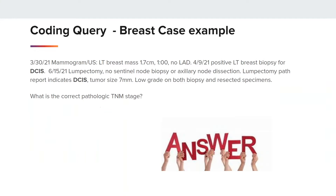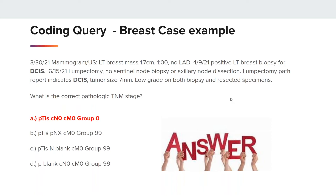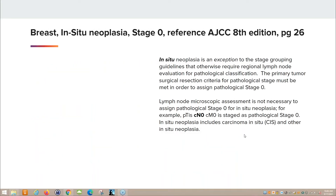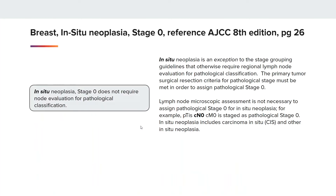The correct pathologic TNM stage is A: PTIS, CN0, CM0, group 0. The reason is that for an in-situ neoplasia, stage 0 does not require node evaluation for pathologic classification. This is listed in the AJCC 8th edition, page 26.